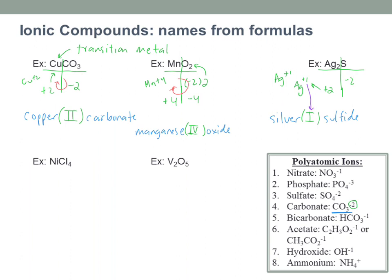NiCl₄: nickel chloride. Chlorides are all −1 and there are four of them, so I have four negative charges. That means I need a +4, and there is only one nickel atom, so this must be nickel(IV) — nickel(IV) chloride.